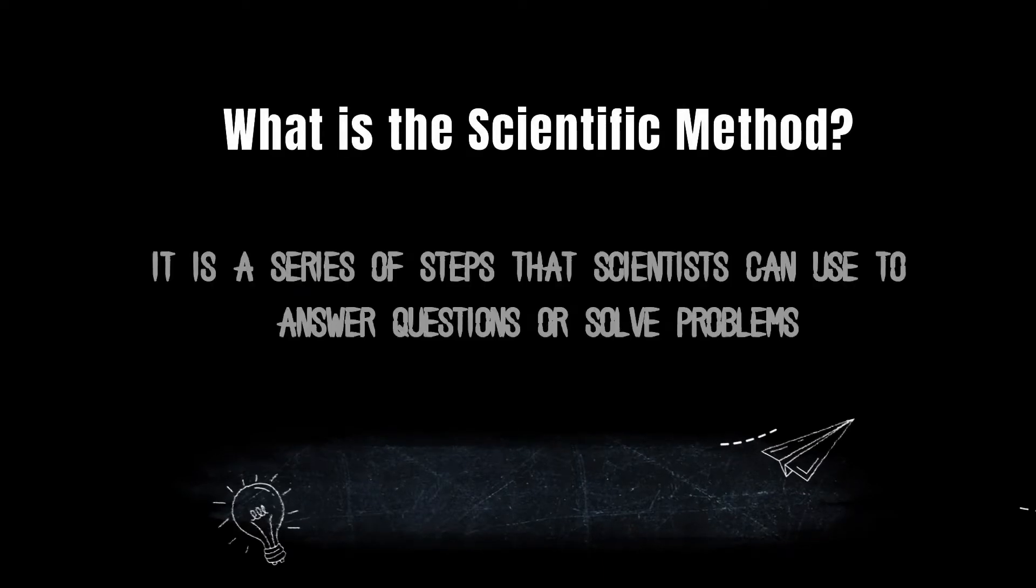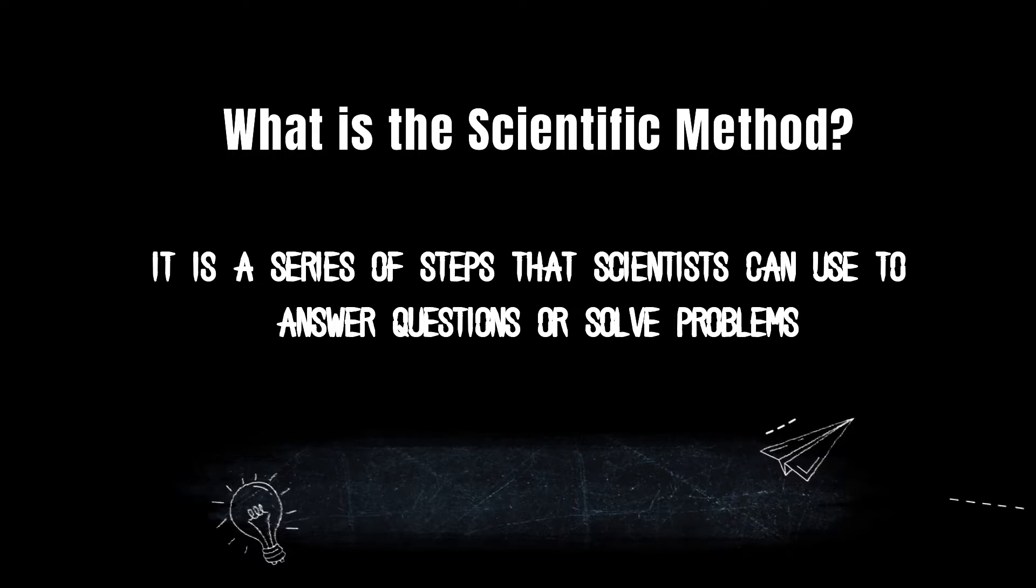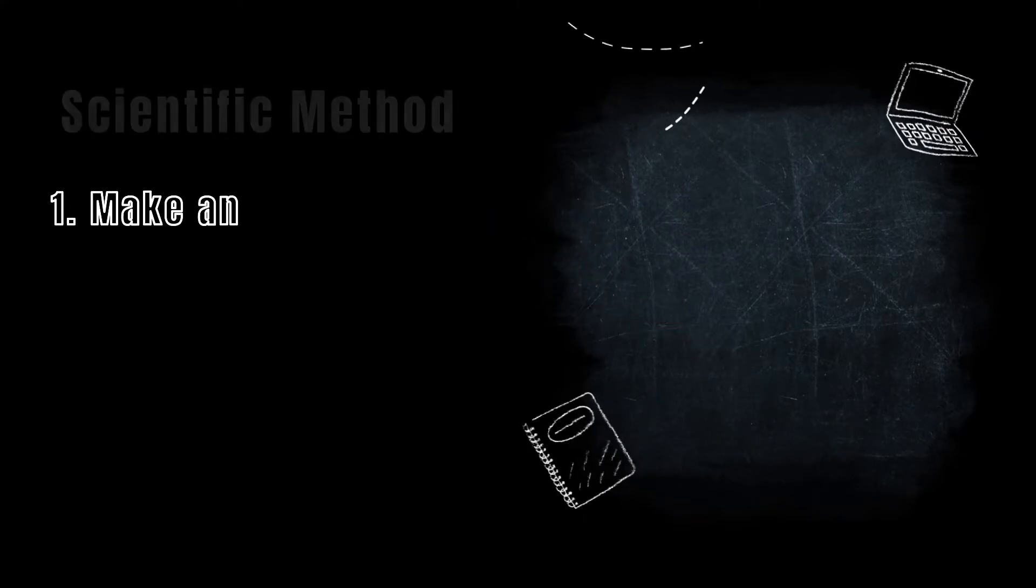The scientific method is a series of steps that scientists or anyone can use in order to answer questions or solve problems. Today we're going to talk about six steps of the scientific method. The first step is to make an observation.